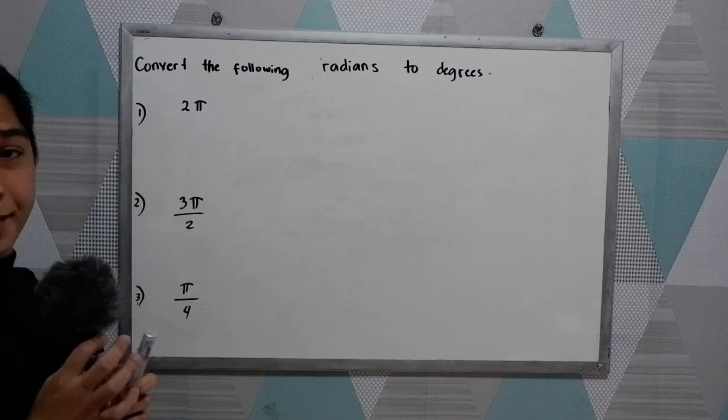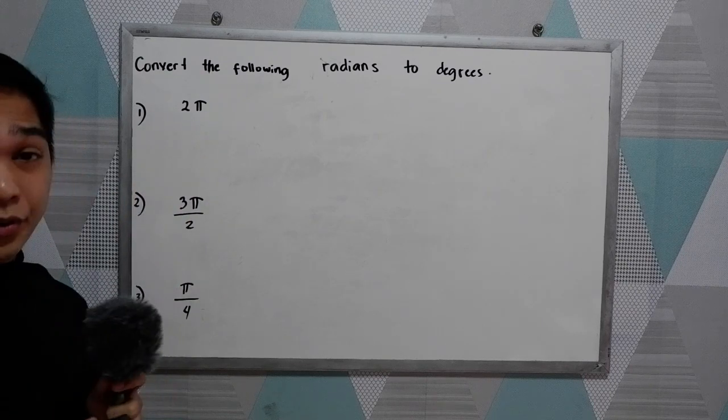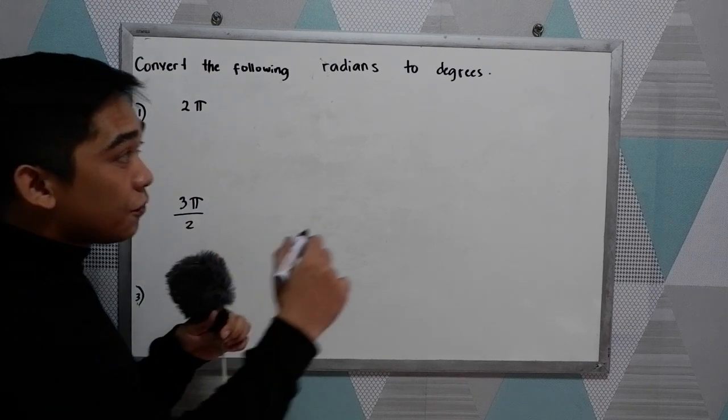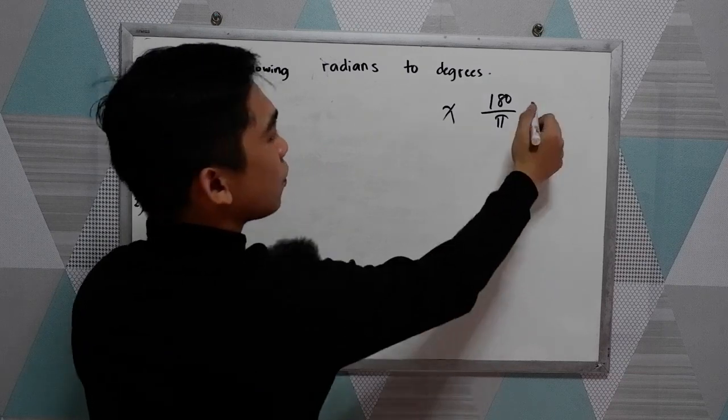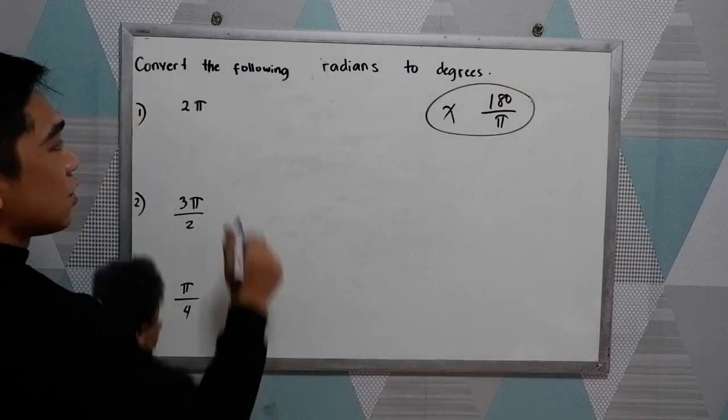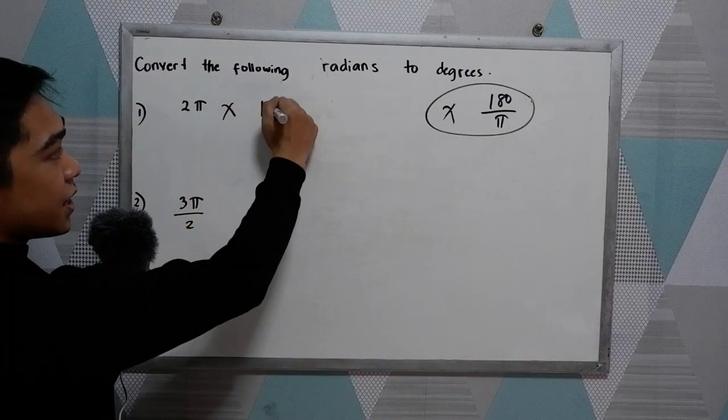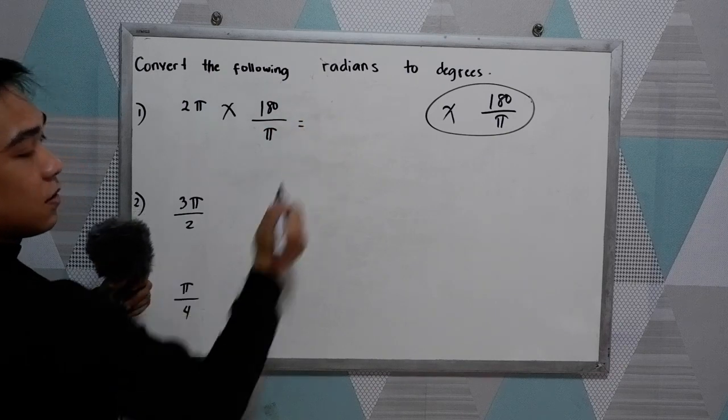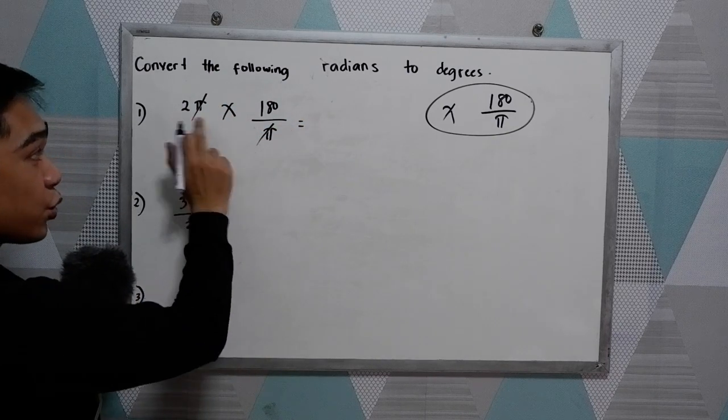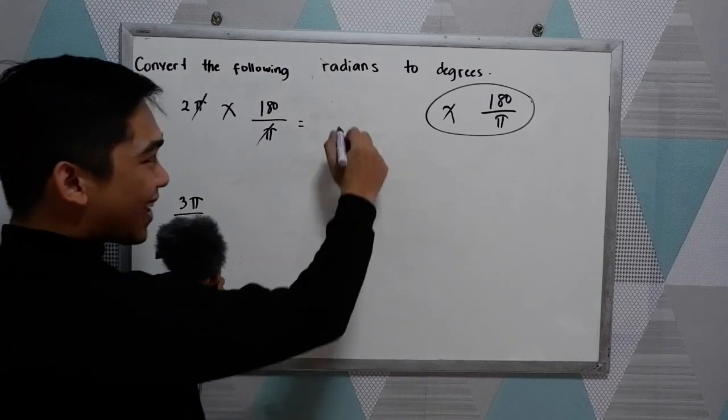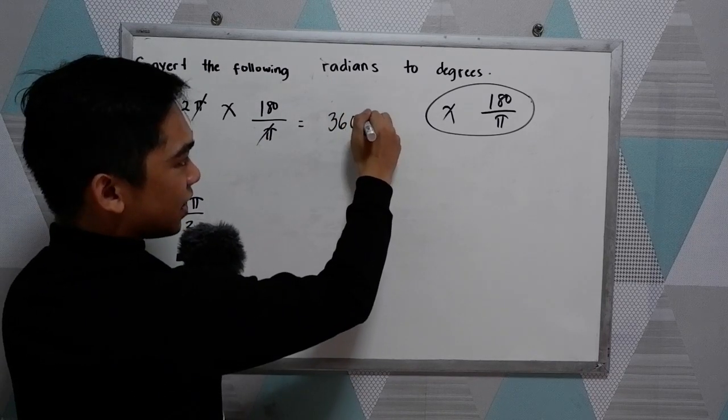Number 1, 2 pi. We're going to convert into degrees. Now, to convert, just multiply it by 180 over pi. So multiply it by 180 over pi. Pi will be cancelled out. So we have 2 times 180, that is 360 degrees.